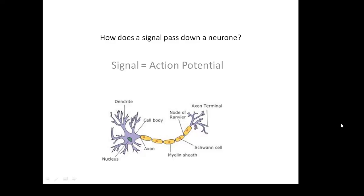The signal, we call it an action potential. It's an electrical signal — an action potential. How does it travel down the axon? How does it travel through the axon?